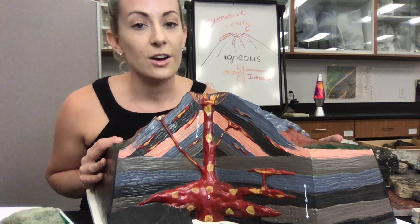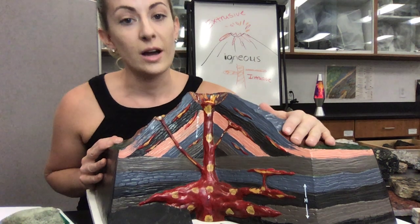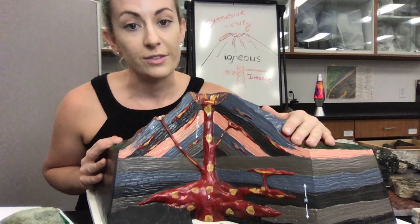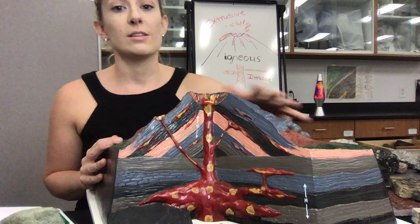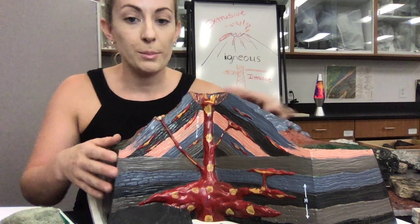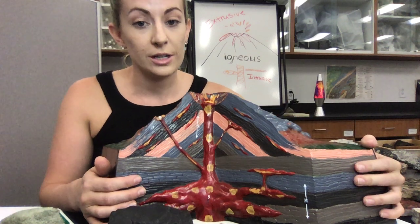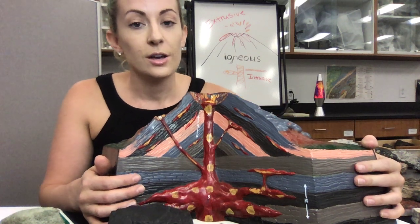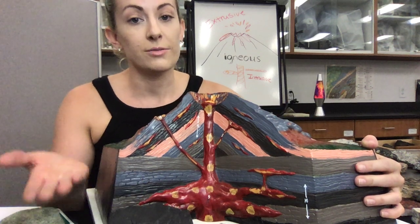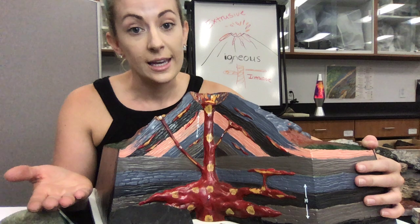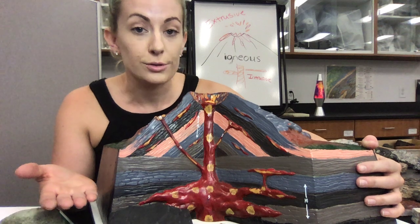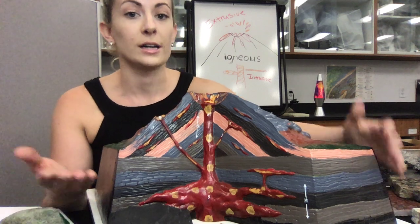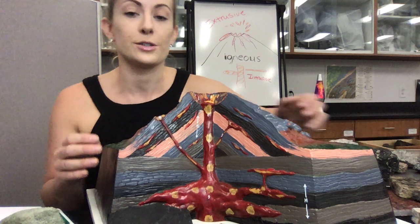Intrusive igneous rocks are the rocks that form under the surface of the earth. Anytime you have magma cooling under the earth's surface, you'll get the formation of an intrusive igneous rock.